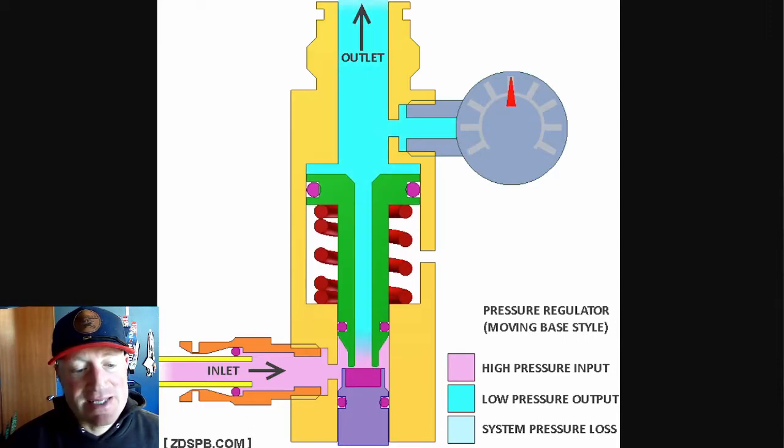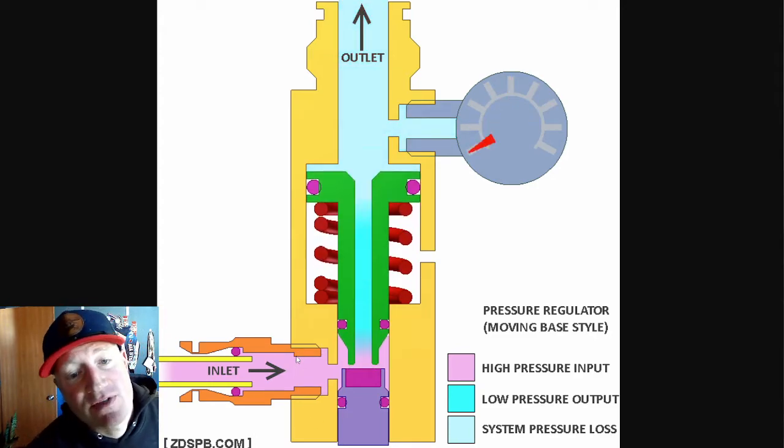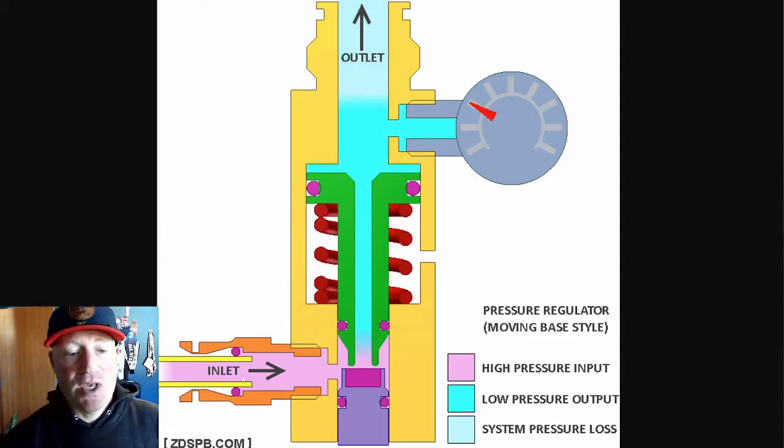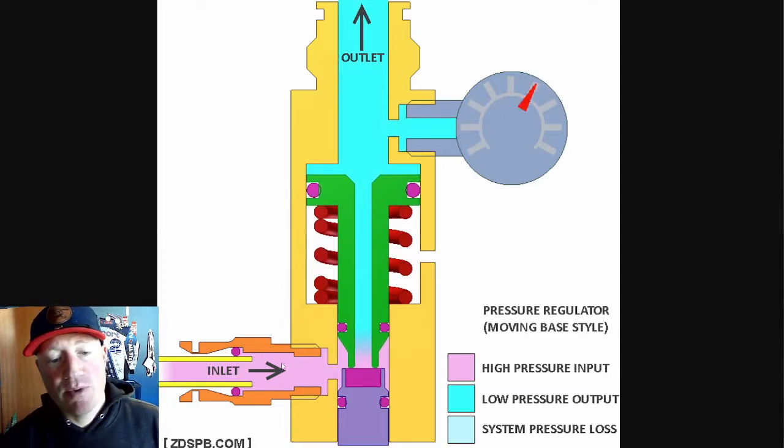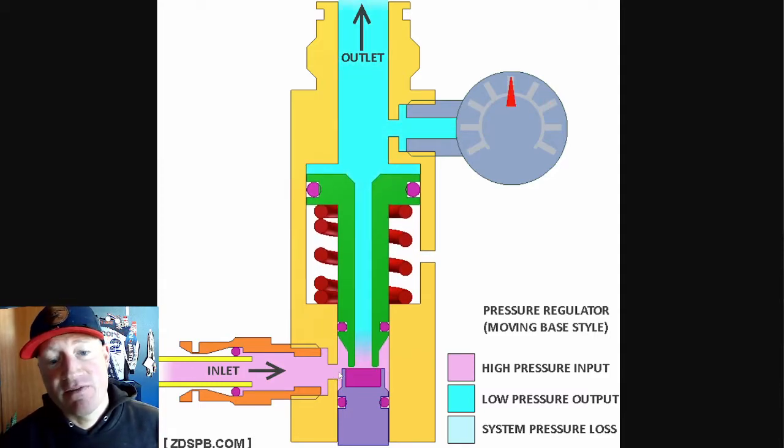This is found on ZDSPB.com. There's a ton of animations there that help break these things down. I'm going to go over some of these over time. We'll go over regs specifically here. So first off, you have your input pressure or the inlet here. In this scenario, it's from your tank going into the regulator. We'll break that down first and I'll explain the difference with how a tank regulator works versus this setup.